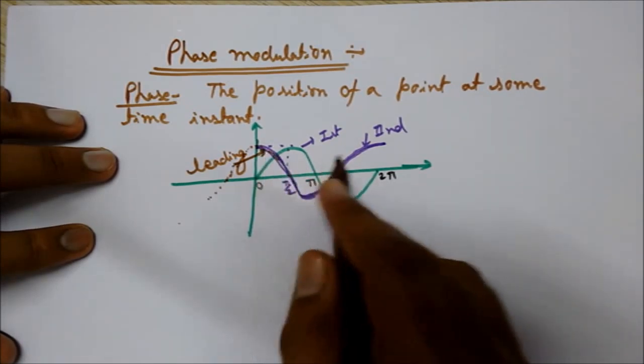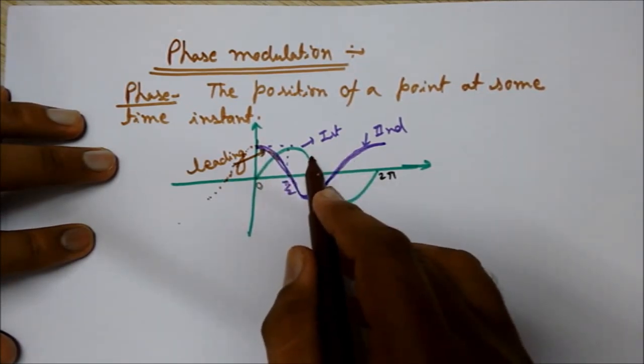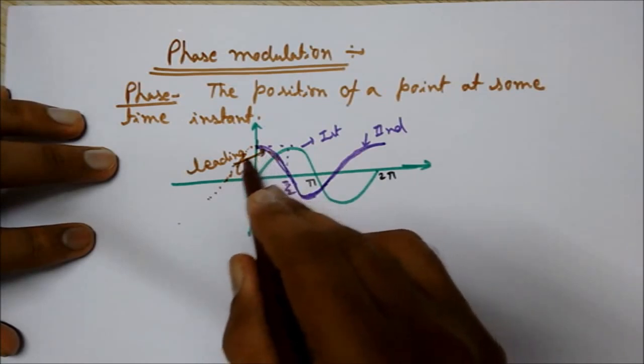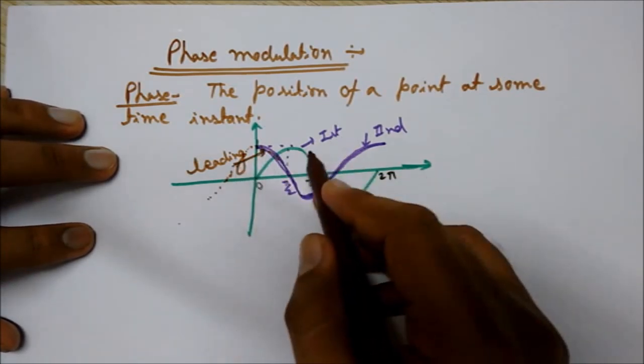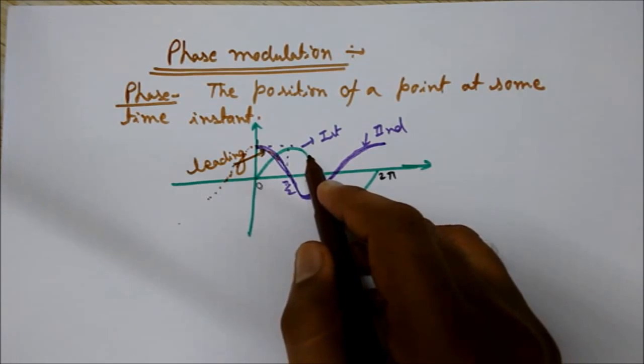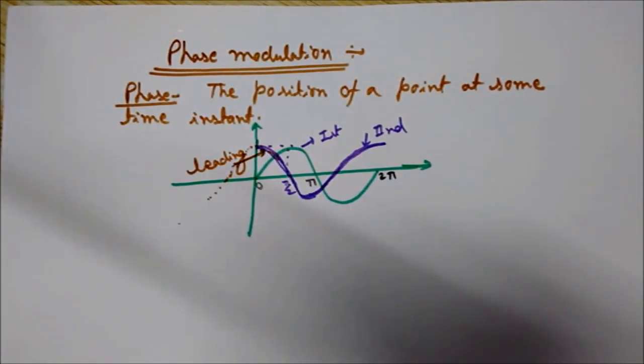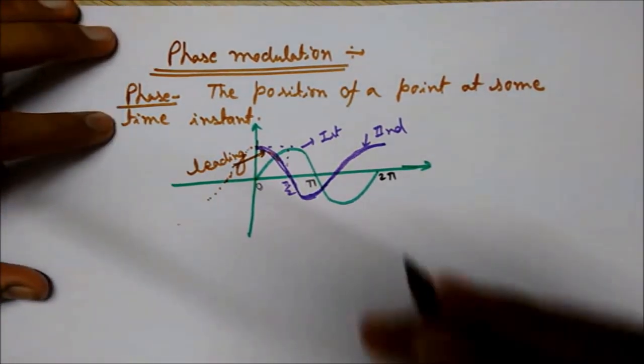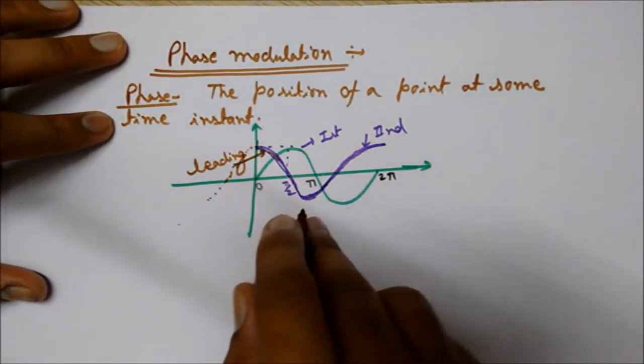So this is the leading and this is the lagging. This blue one is the leading wave and the green one is the lagging wave. These waves are called to be in phase quadrature because these are 90 degree, at 90 degree phase difference. So these are in phase quadrature.